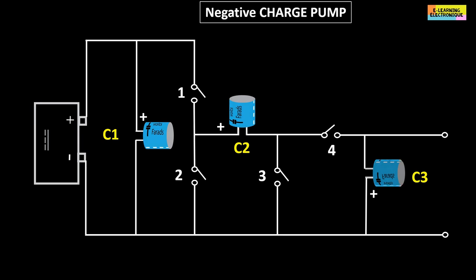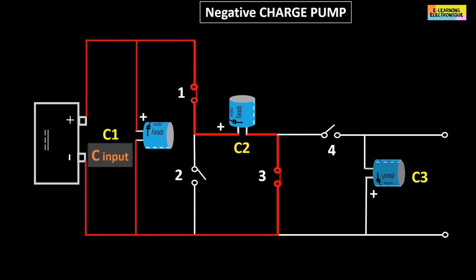In the first phase, switch number 1 and 3 are closed. In this configuration, the input capacitor C1 is paralleled with the capacitor C2, which is the pump load capacitor.